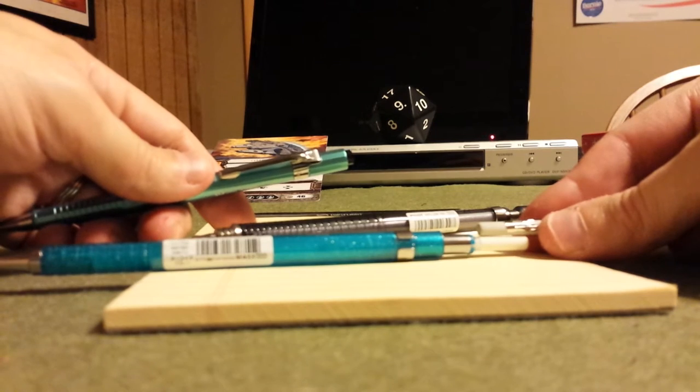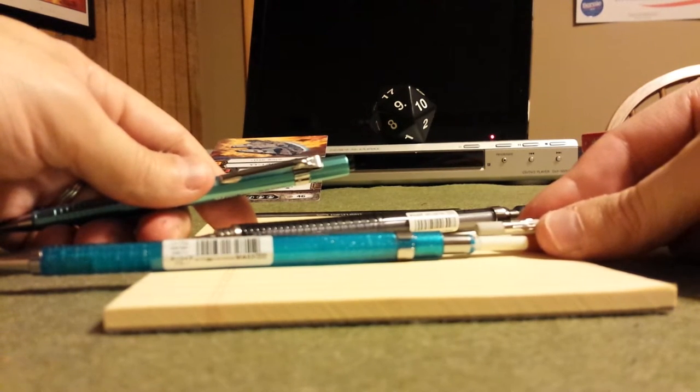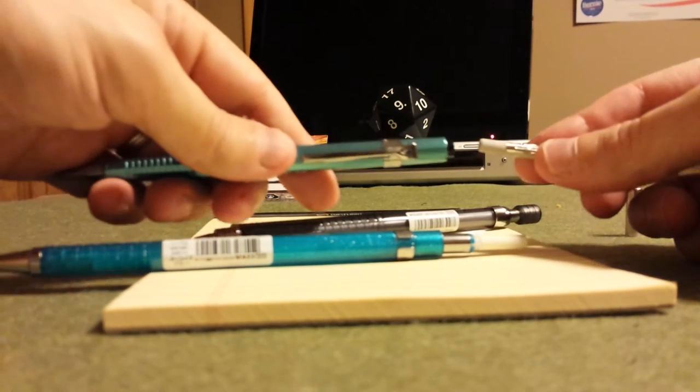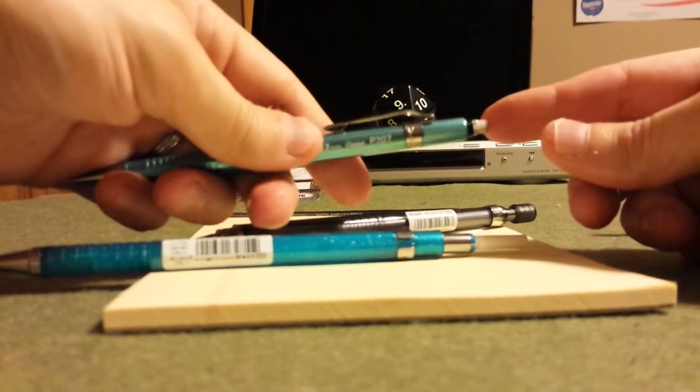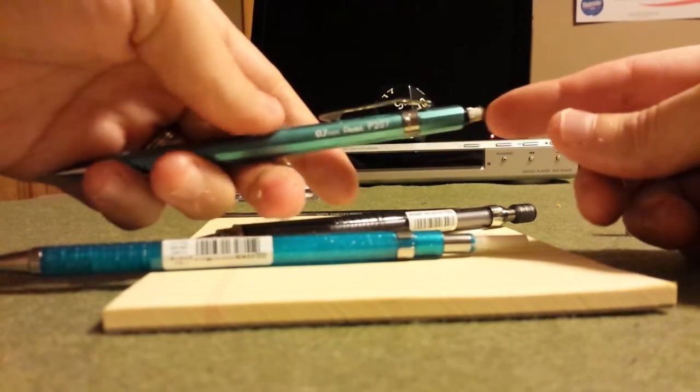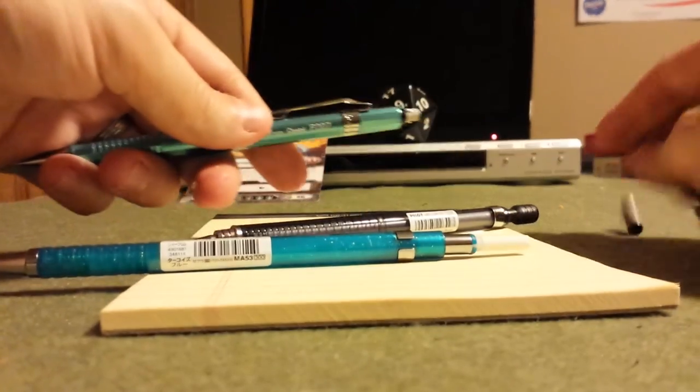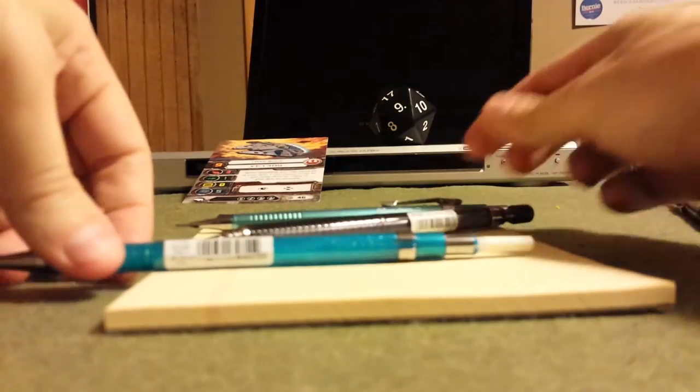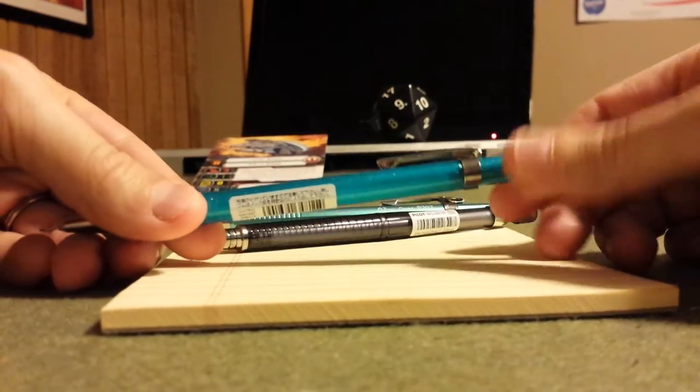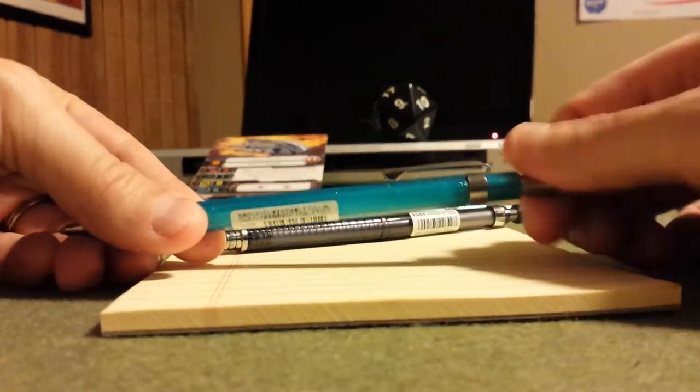When you compare it to the eraser on the Pentel P200 series, you can see that in actuality the P200 series eraser is larger. It's made out of a stronger compound. You have to manually move the P207 eraser when it starts to wear down. There's an eraser cap on the P207 that you have to take off, which is not the case on the Color Flight.